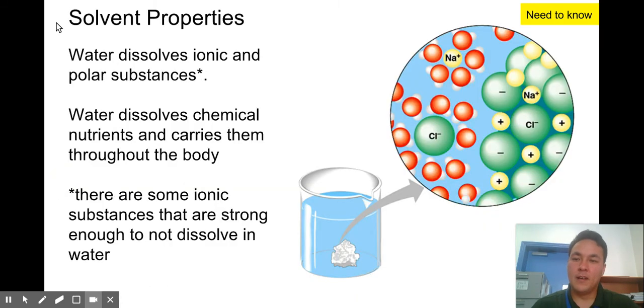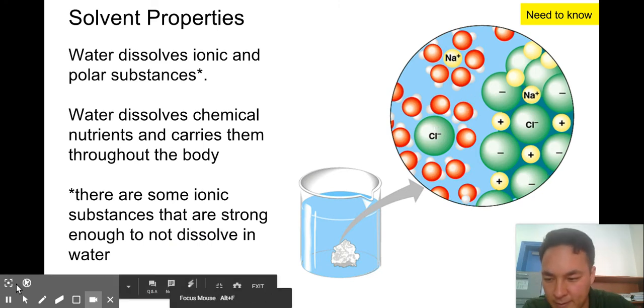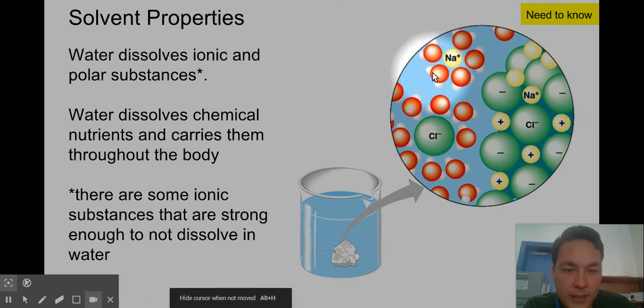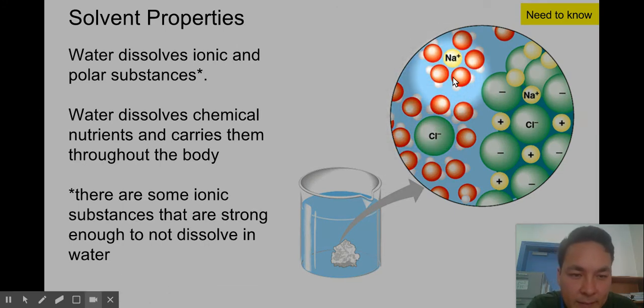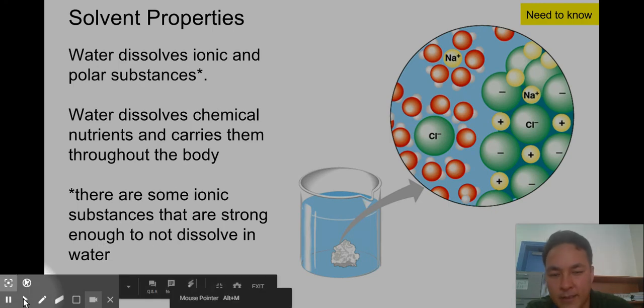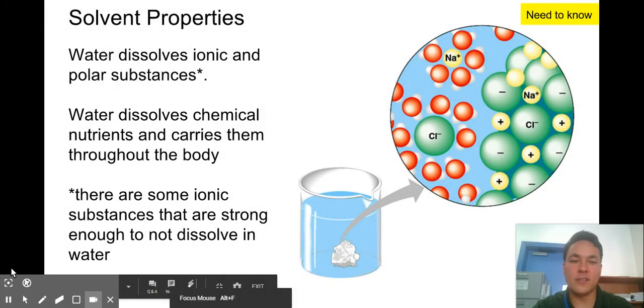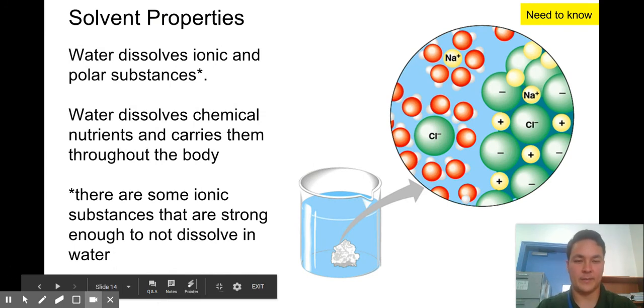All right, the last one. Water is a universal solvent. It's able to dissolve many things. Look at this picture and see if you can kind of zoom in on it. The positive, excuse me, the negative O's are surrounding this positive sodium ion and the positive H's are surrounding this negative chloride ion. So it's helping to pull apart or dissociate that salt. So this works with all polar molecules and works with a lot of ionic substances. This is really important because it helps to dissolve nutrients and carry items throughout our body.